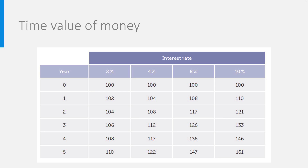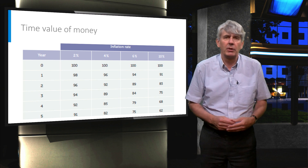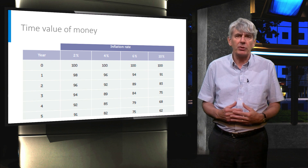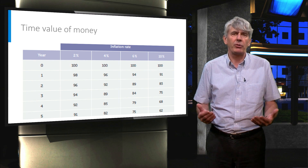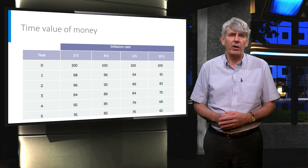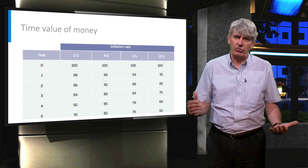When today we put 100 euro in the bank, the nominal value of this 100 euro after five years will be equal to 122 euro, when the interest rate is equal to 4%. The opposite is also true. Money kept in a safety deposit box will lose value over time as the result of inflation. The nominal value remains the same, but the buying power diminishes.